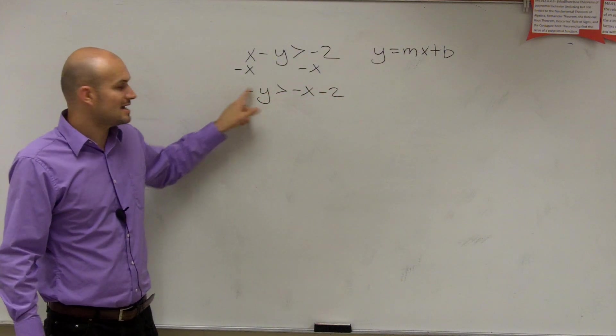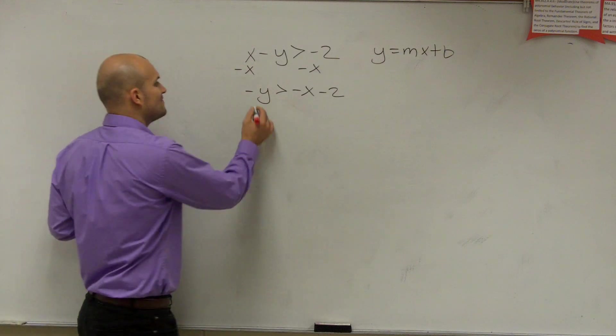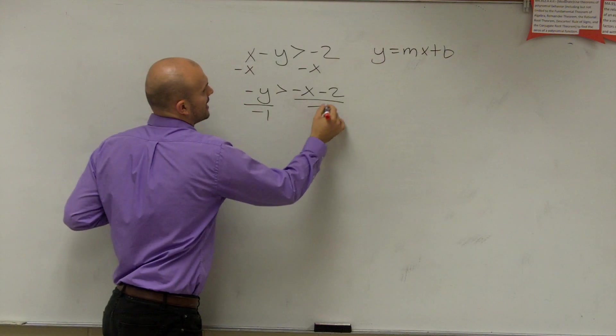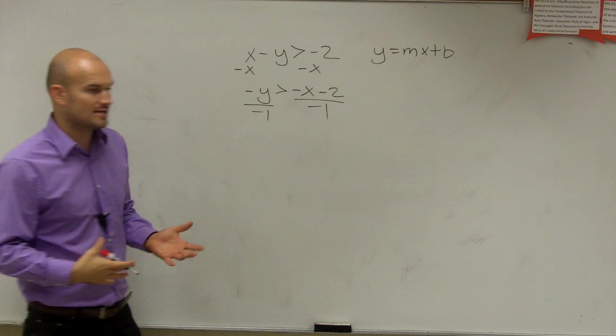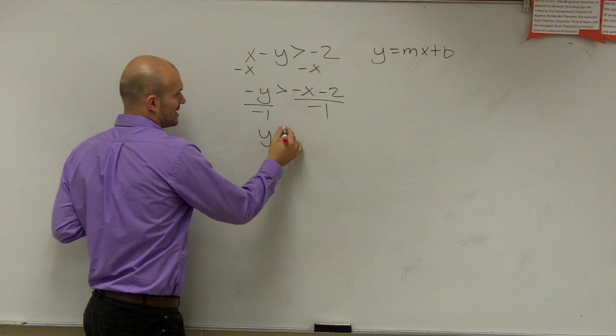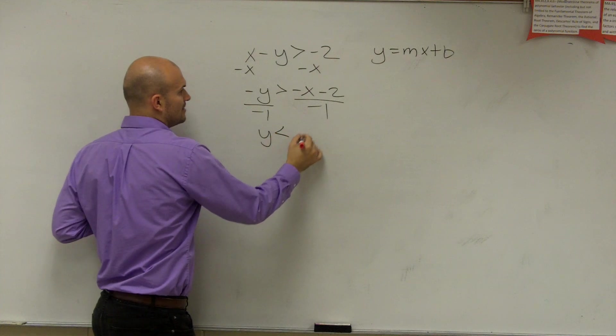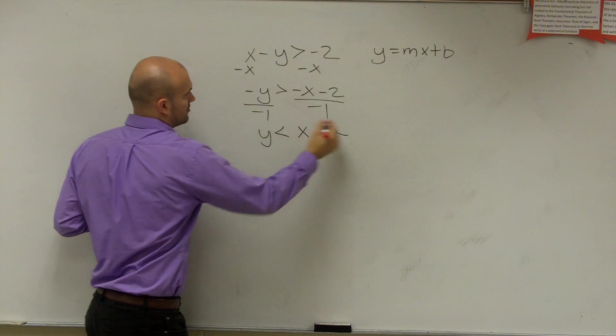Then the next thing I need to remember is I need to get rid of the negative 1. So I'm going to divide by negative 1. And if you guys remember, with inequalities, whenever you divide or multiply by a negative number, you flip the sign. So now I'm going to have y is less than positive x plus 2.